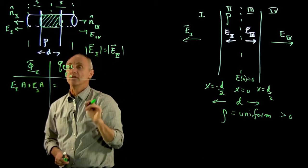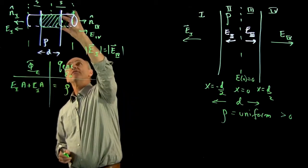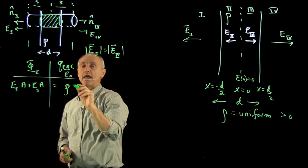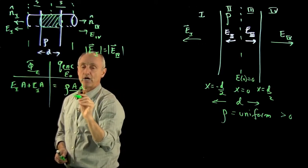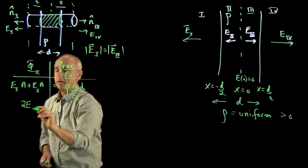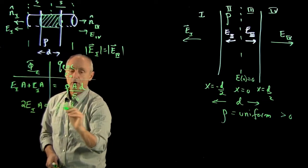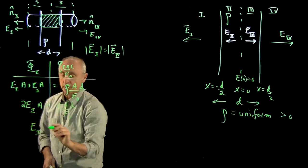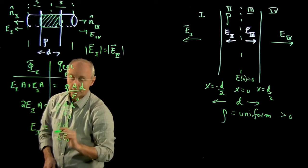And the charge enclosed, now this is a volume charge density. Rho is charge per volume. So what is the volume of a cylinder? Well, it's just the cross-sectional area a times the thickness of the cylinder, d. And we divide by epsilon 0. And so we get 2e1a by applying Gauss's law. Rho ad epsilon a. And the magnitude of the field is given by rho d over 2 epsilon 0.